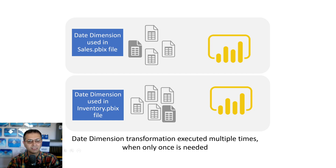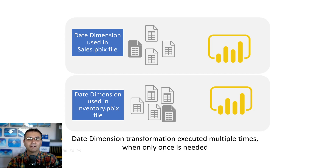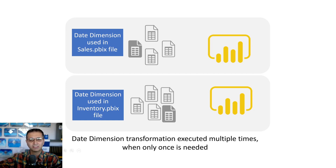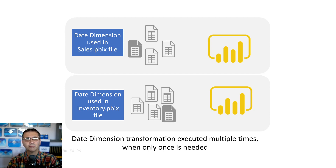Now after a few months the inventory team comes and says they also want an inventory report. It's totally different data and a totally different audience, so you create a different file. In that file you have a warehouse table, an inventory movement fact table, a product table, and a date table. So the product table and date table are used in both files. Do you copy and paste those codes from the sales PBIX into this one? That's not a good idea because when you want to change something, you have to change it in multiple places.